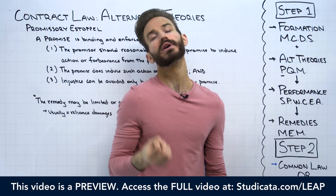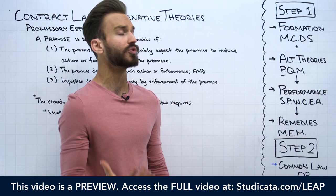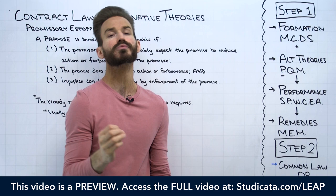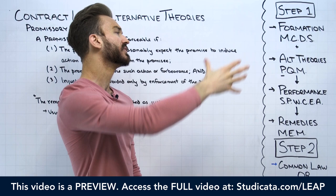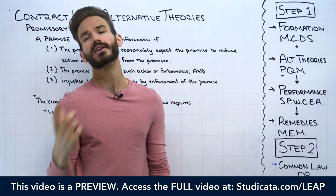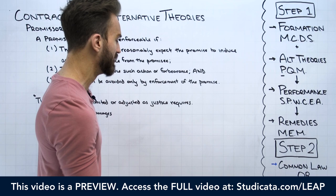When we were talking about mutual assent — specifically termination of the offer and irrevocable offers — we said that one of the four major ways an offer can become irrevocable is if the offeree detrimentally relies on the offer in a reasonable and foreseeable manner. The most famous case illustrating this is Drennan v. Star Paving Co., in the context of general contractor and subcontractor relationships.